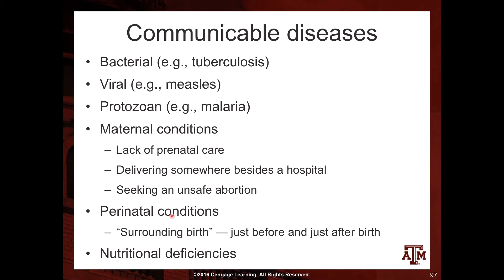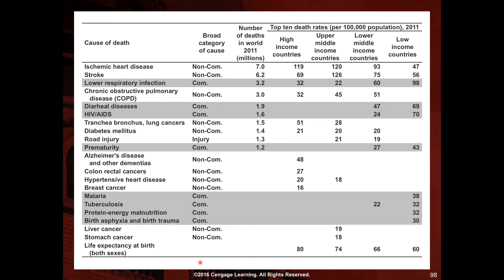Perinatal conditions — those surrounding birth, just before or just after — are also associated with higher chances of having communicable diseases. The maternal conditions that women experience during pregnancy or childbirth, as well as perinatal conditions, expose them to bacterial, viral, or protozoan diseases. Nutritional deficiencies are also factors associated with higher chances of communicable diseases.